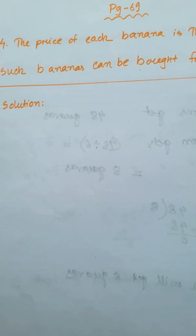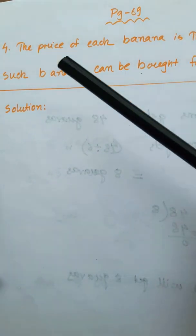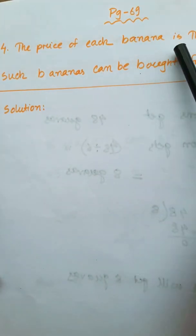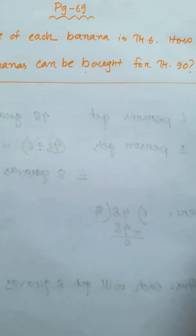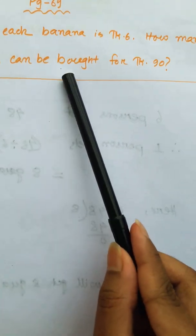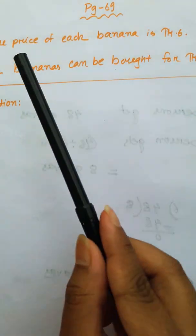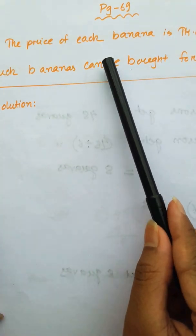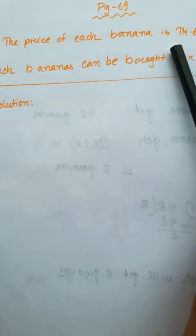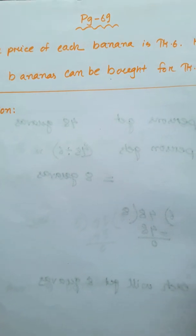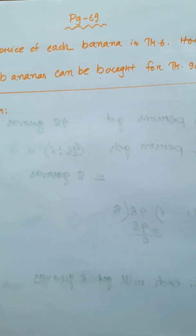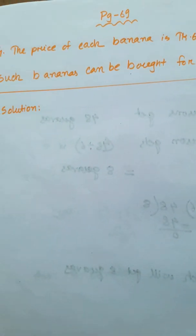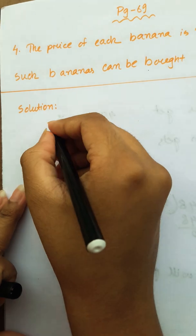Our next problem: the price of each banana is Taka 6. How many such bananas can be bought for Taka 90? If you have Taka 90, you can divide by 6.